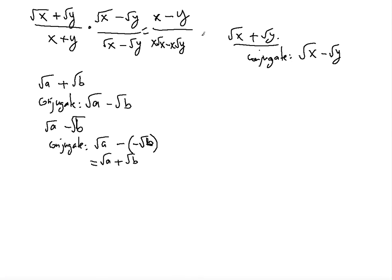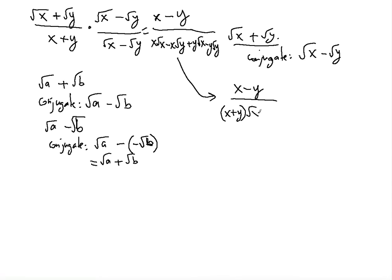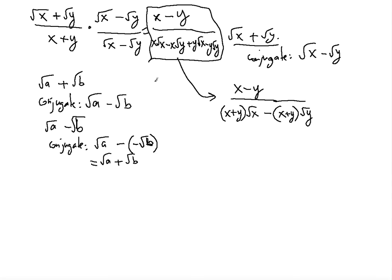The denominator expands to x√x minus x√y plus y√x minus y√y. We can combine like terms: √x is common to (x + y), and √y is common to (−x − y). So this can be written as (x + y)√x minus (x + y)√y. This is as far as we can simplify, and this is how you rationalize the numerator.